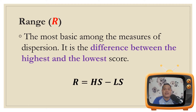Let us unlock the measures of dispersion one by one. Let us start with the range. The range is the most basic among the measures of dispersion. All you have to do is subtract the lowest score from the highest score: R equals highest score minus the lowest score.